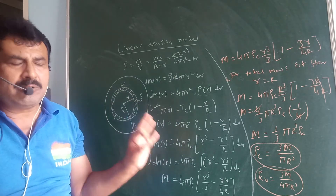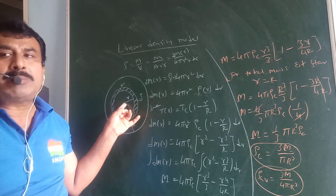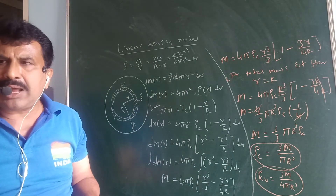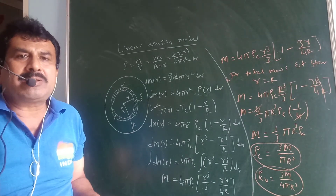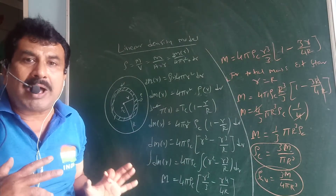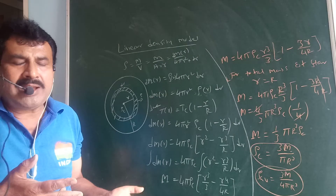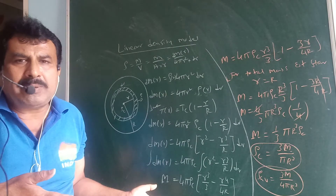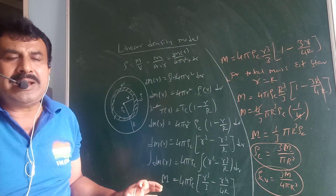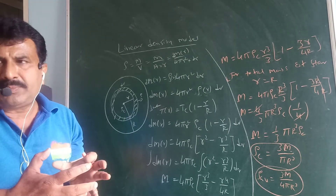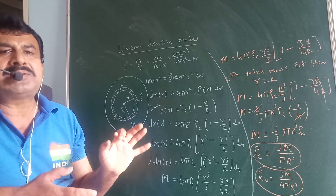Density, luminosity, pressure, and internal pressure are all maximum at the core of the star. At the core of the star, the density, luminosity, temperature, and internal pressure are at their highest values. At the core of the star, the density is maximum and hydrogen is concentrated there.